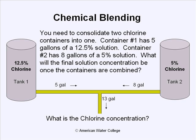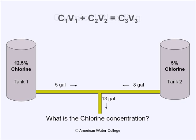To solve this problem, we'll use our chemical solution formula. It reads: the concentration and volume of solution one added to the concentration and volume of solution two is equal to the concentration and volume of solution three, or the final concentration. In this case, the concentration and volume of solution one is the 12.5% and the five gallons from tank one.